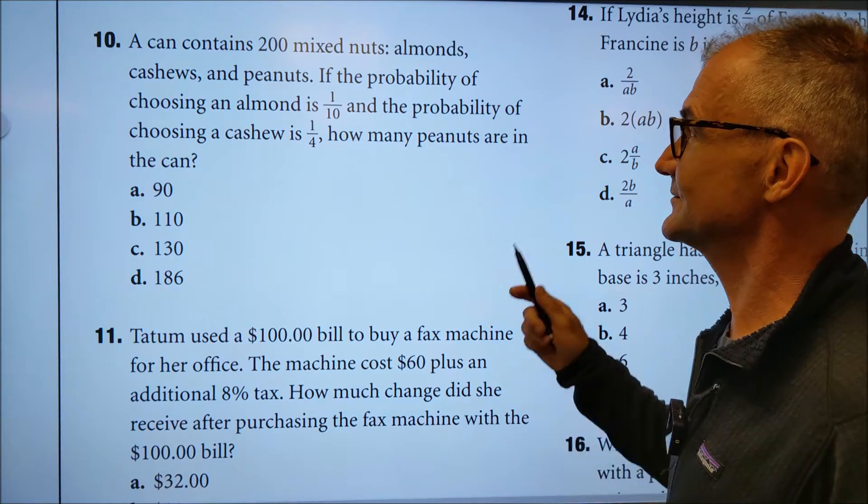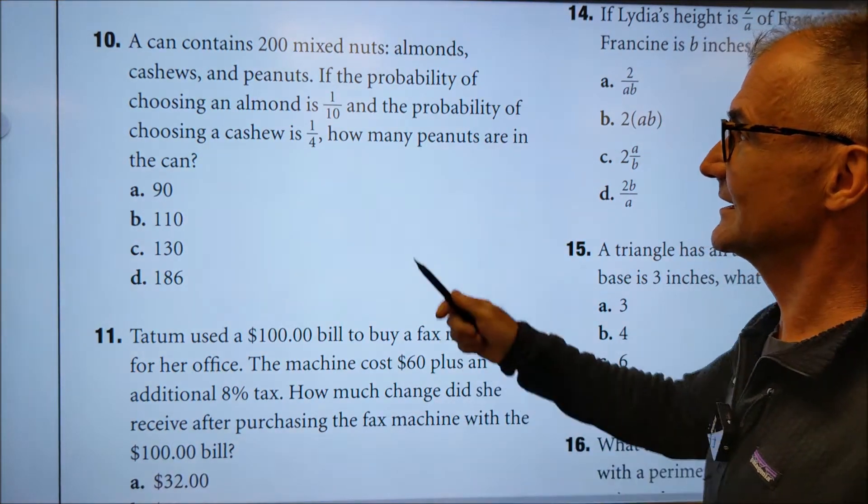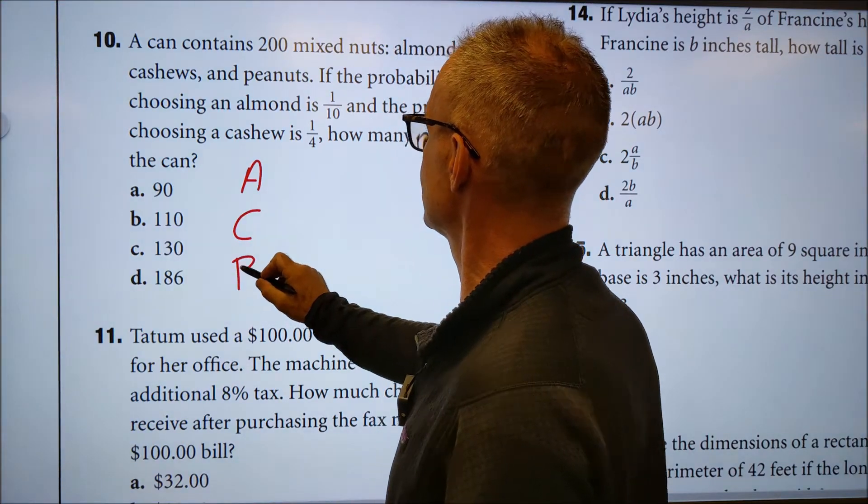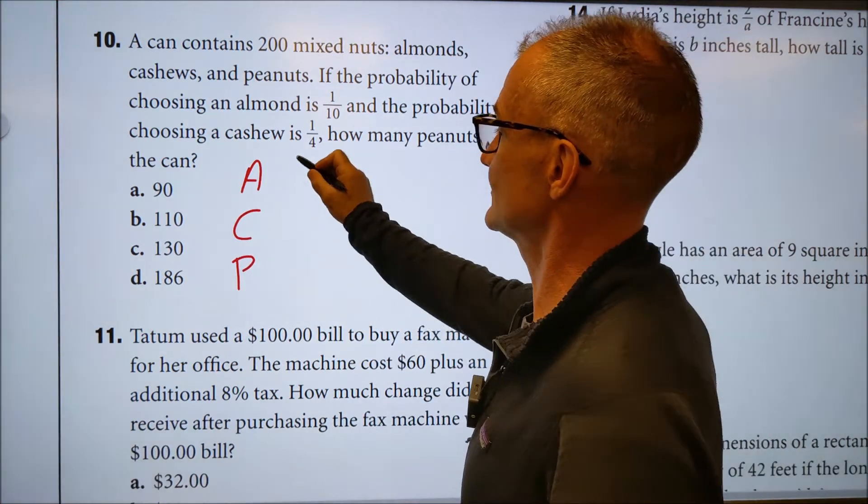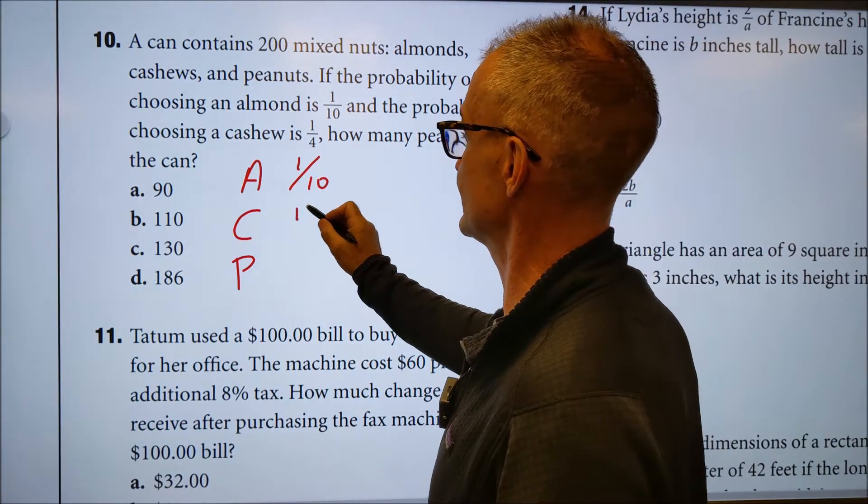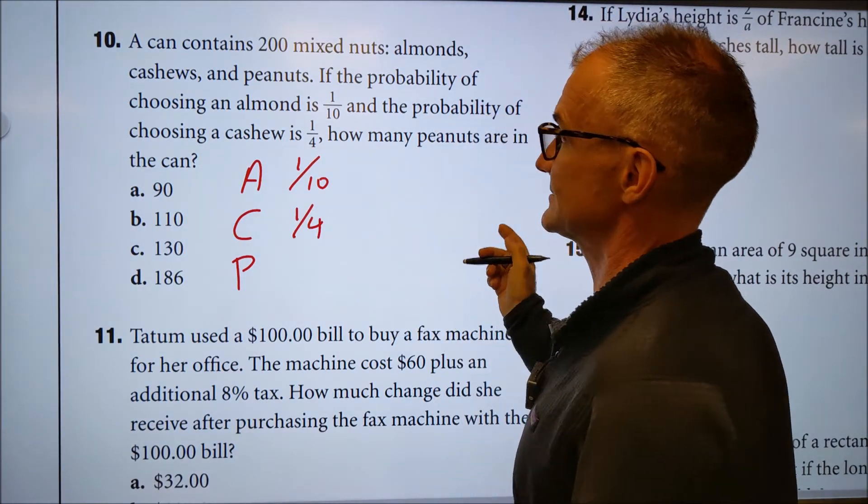Problem number 10. This is from chapter five ratios. A can contains 200 mixed nuts: almonds, cashews, and peanuts. If the probability of choosing an almond is one in 10 and the probability of choosing a cashew is one in four, how many peanuts are in the can?